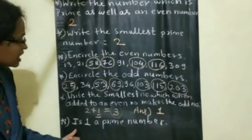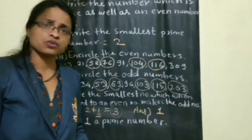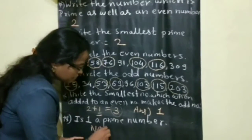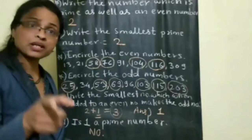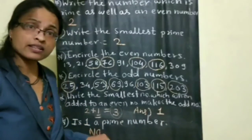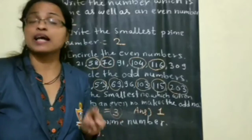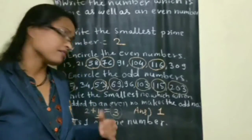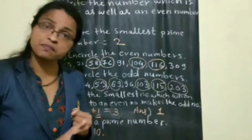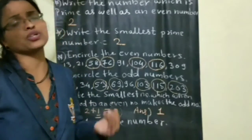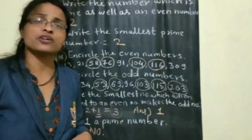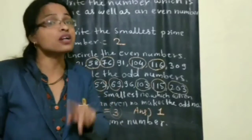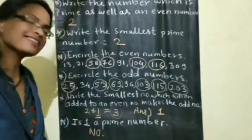Next: is 1 a prime number? No, it is not a prime number. 1 is not a prime number because it does not have two factors, and a prime number must have exactly two factors. 1 is also not a composite number because it does not have more than two factors. Therefore, 1 is neither prime nor composite.